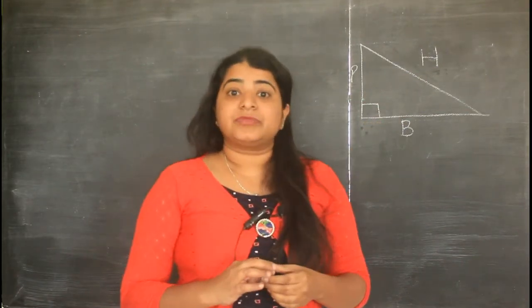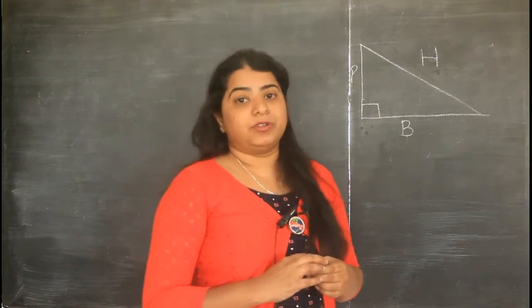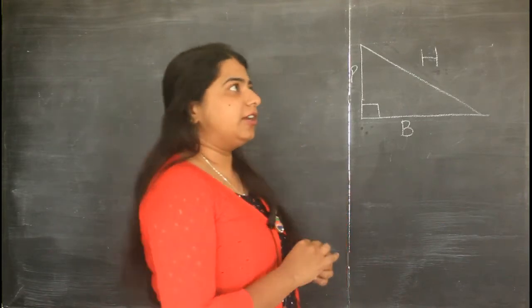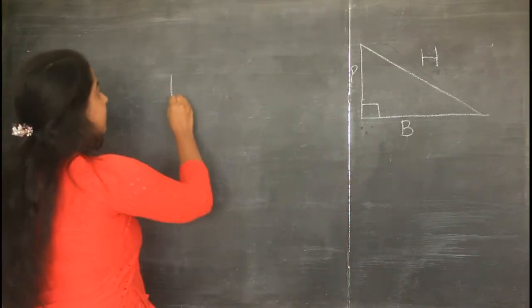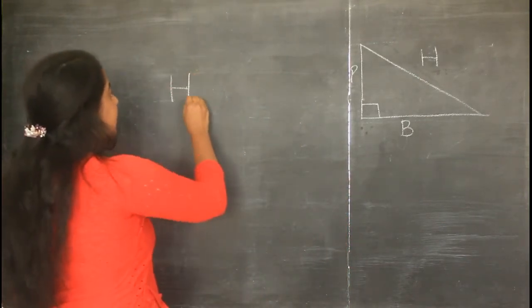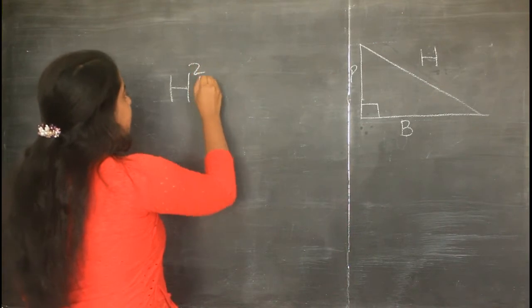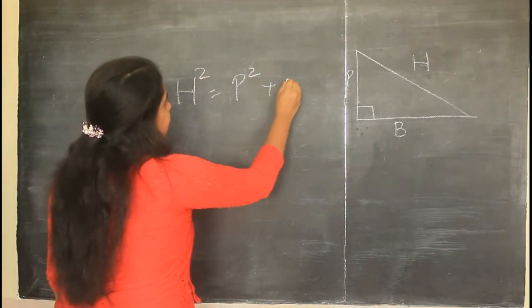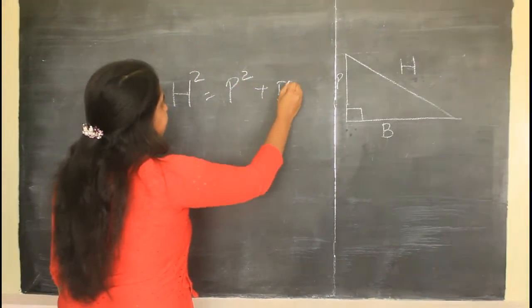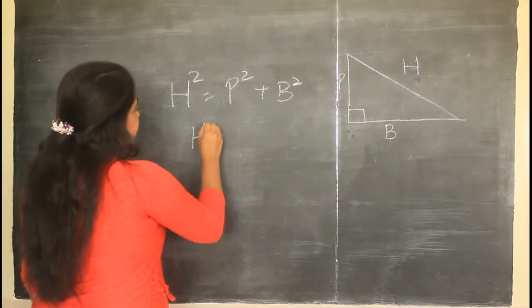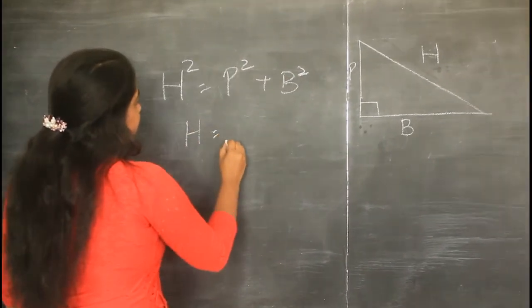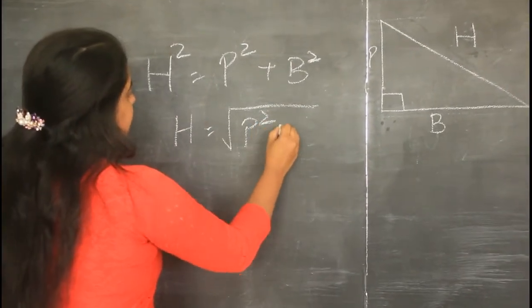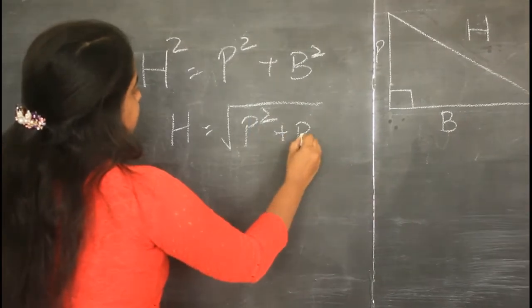Let us get into the problem. For that, you should first learn your formula. The Pythagoras theorem works on h² = p² + b², or h = √(p² + b²).